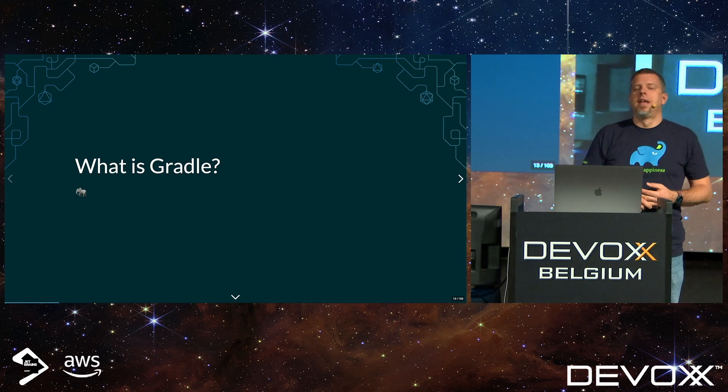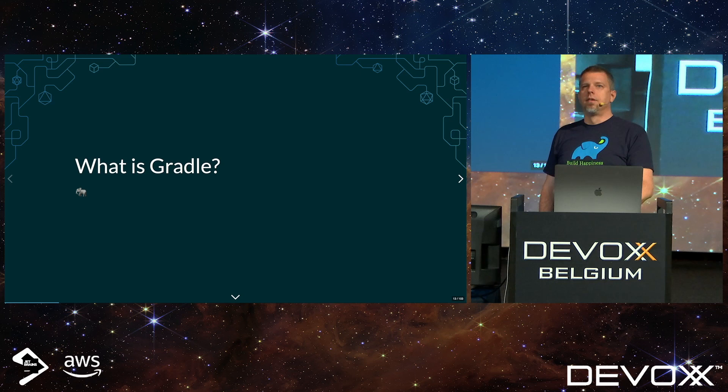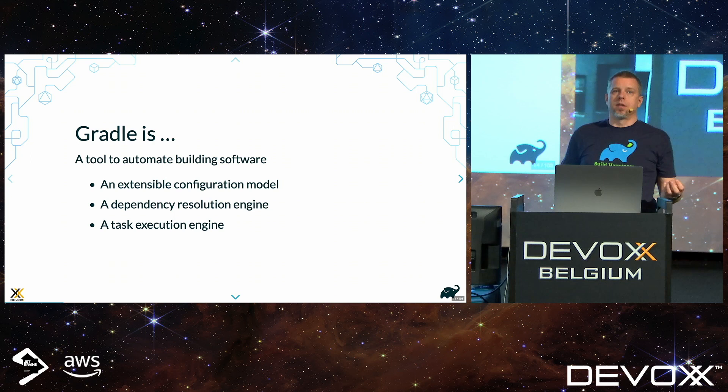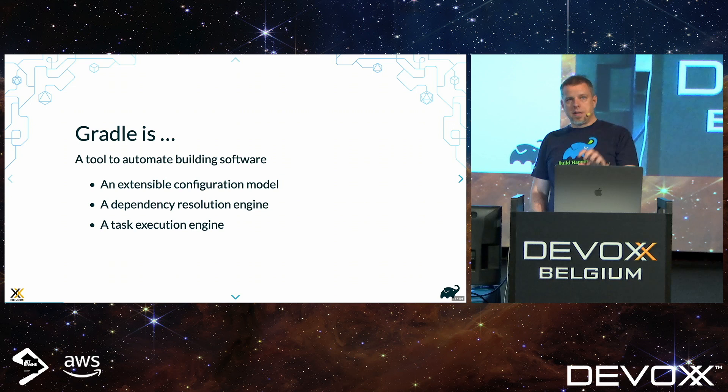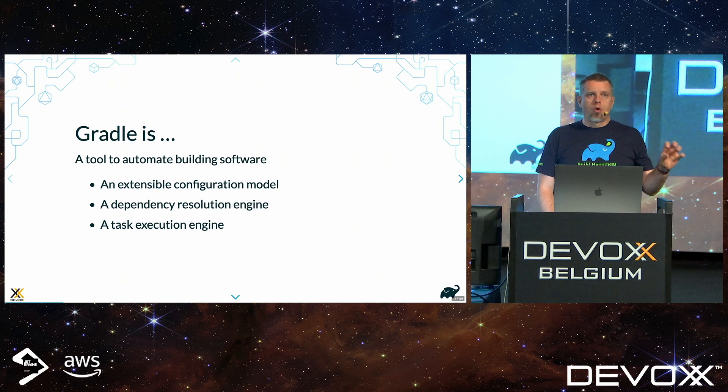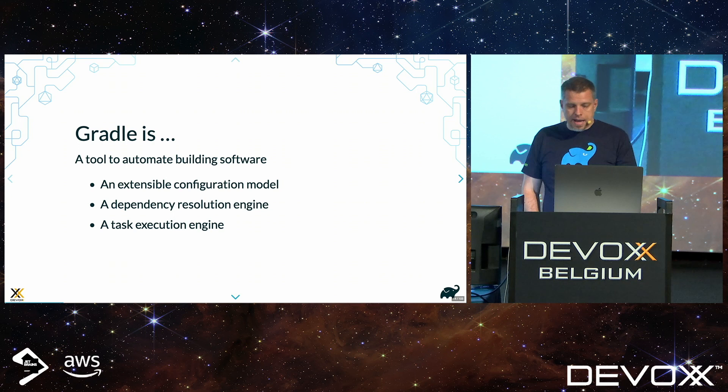So — what's Gradle? It's actually a tool to automate building software. At the core of it you have an extensible configuration model, dependency resolution, and an execution engine. That's the core of Gradle. Based on that, we build plugins for ecosystems. Gradle has its set of core plugins — so you can build Java, Groovy, Scala code from core Gradle plugins. You can interact with tools like Checkstyle or Jacoco for code analysis, running tests — all of that comes bundled as part of Gradle.